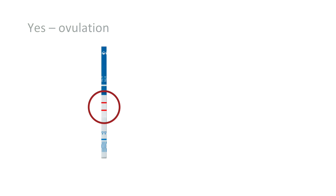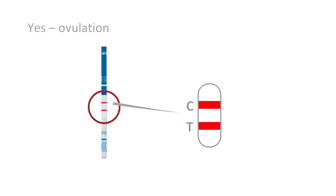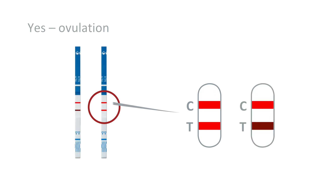Two clearly visible lines indicate ovulation. The intensity of the test line must equal or exceed the intensity of the control line. Ovulation is expected within the next 24 to 36 hours. This is the optimum time for sexual intercourse. No further testing is required during this cycle.